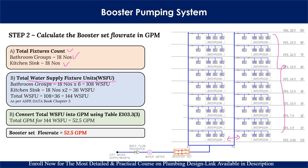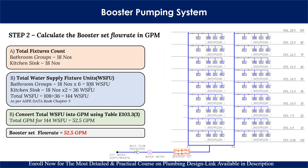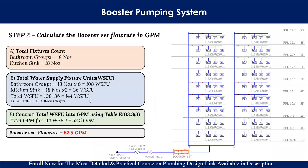We need the WSFU values for the bathroom group and kitchen sink, which we get by referencing the ASPE — American Society of Plumbing Engineers — standard. In the table, for a bathroom group with private occupancy, the WSFU value is 6. So: 18 × 6 = 108 WSFU for bathroom groups. For kitchen sink with private occupancy, the WSFU value is 2. So: 18 × 2 = 36 WSFU. Adding both: 108 + 36 = 144 WSFU for the complete building.